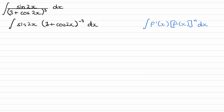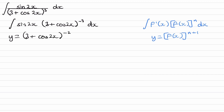Whenever you have something of this form, the solution will be of the form f(x) to the power of n plus 1. So what we do is raise the power of 3 plus cos 2x to the power of minus 3 by 1. Our solution would then be of the form 3 plus cos 2x to the power of minus 2.